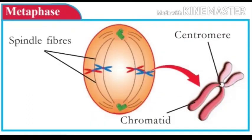The second phase is known as metaphase. Spindle fibers attach to the centromere of chromosomes. Chromosomes are aligned linearly at the center of the cell.